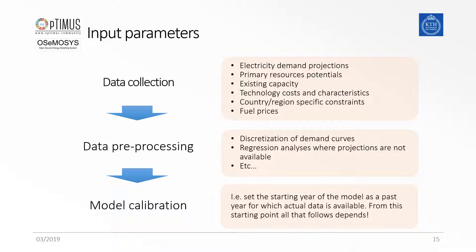Then the data must be processed. That means that demand curves have to be defined in a discrete way, technologies must in some cases be aggregated, demands must be projected if data is not available, etc. — all in order to transform raw data into a format that can be used in OSeMOSYS. And then we are ready to start modeling.